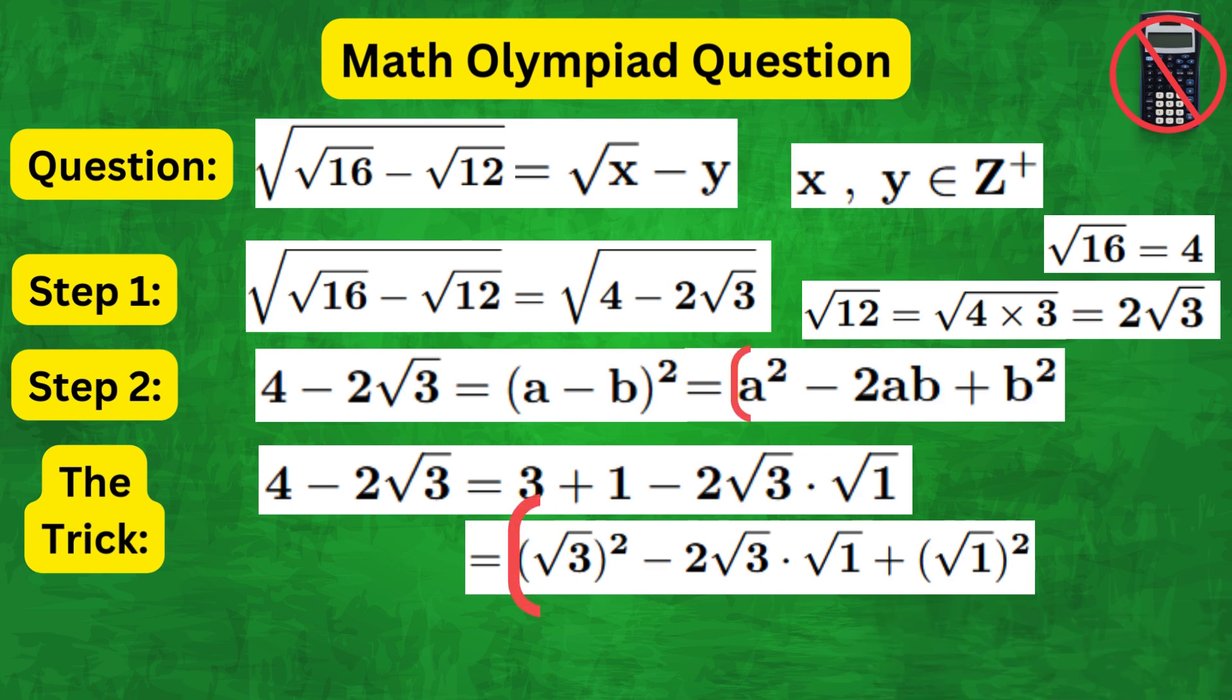This is in the form a squared minus 2ab plus b squared, where a equals root 3 and b equals root 1.